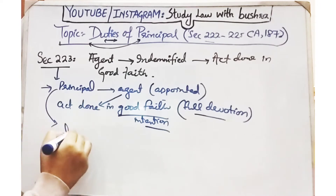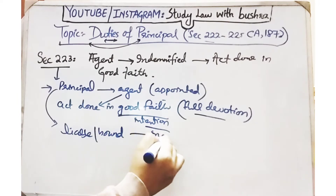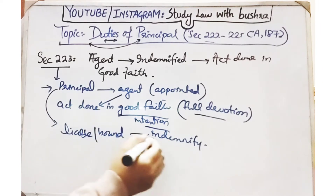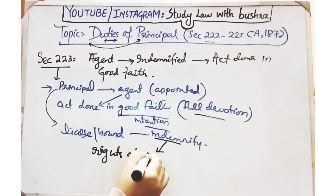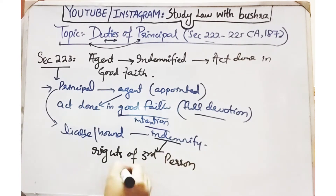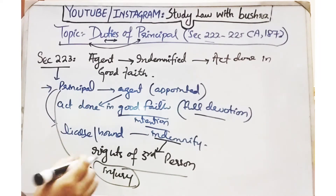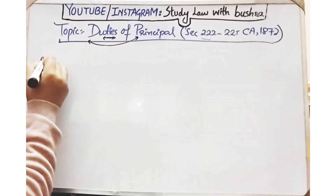So when the agent is working with good intention, what is the principal's responsibility? The principal's responsibility is to indemnify his agent against all losses which the agent incurs while performing that act, or if that act causes injury to the rights of a third person. If while working in good faith the rights of a third person are injured, who will compensate for that injury? Our principal will compensate for that injury.